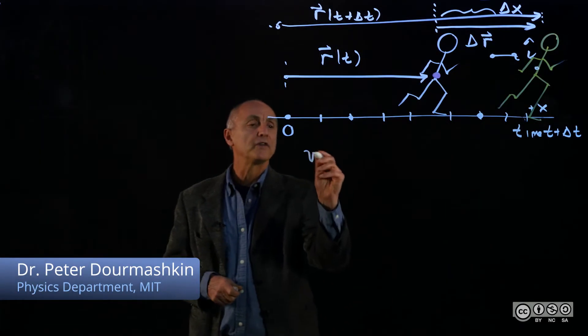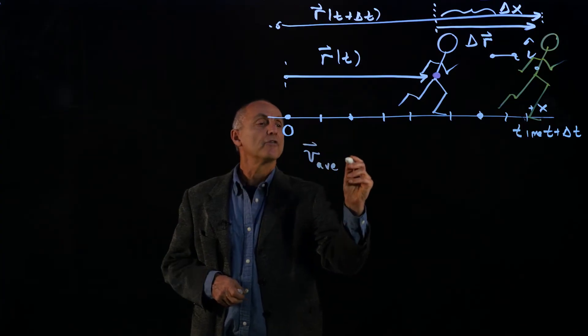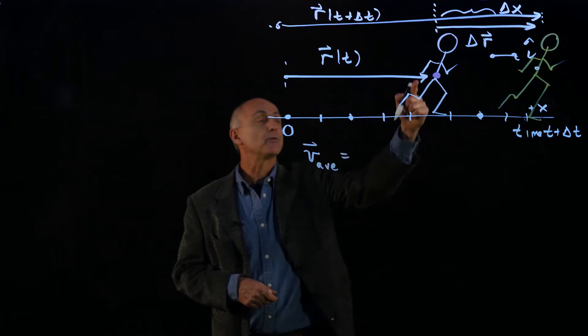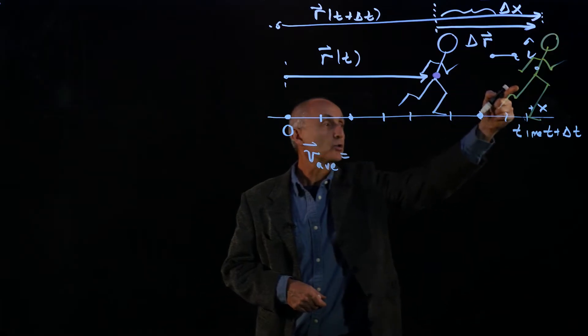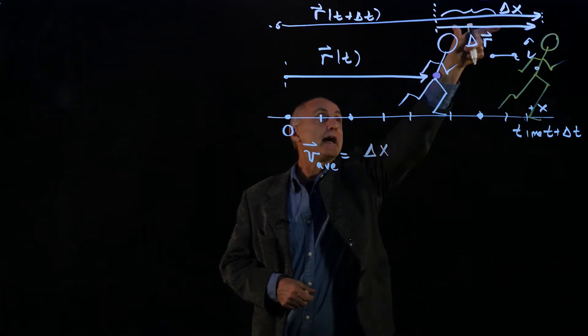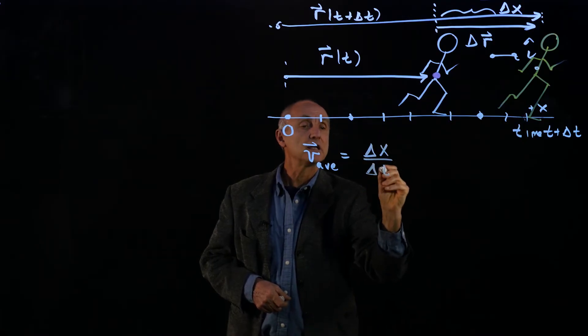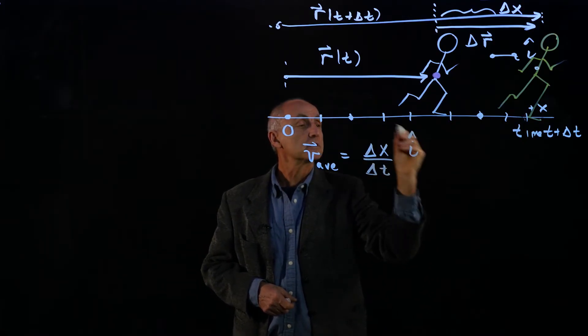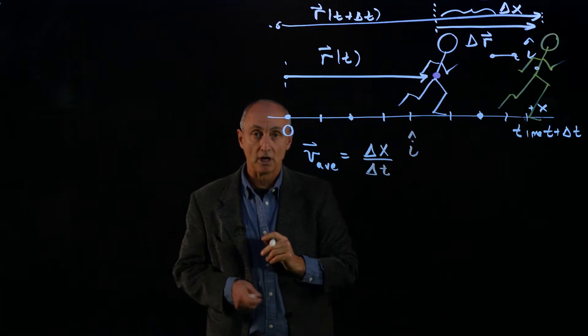We've now described what we call the average velocity for a time interval between when the runner started at time t to a later time at t plus delta t. And we describe that as the component of the displacement vector divided by the time interval times a unit vector, i hat.